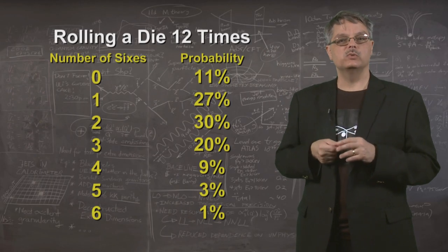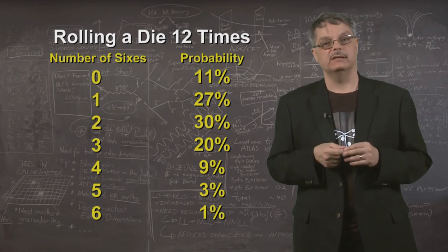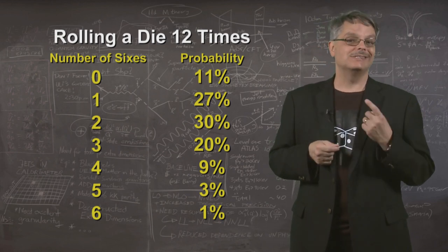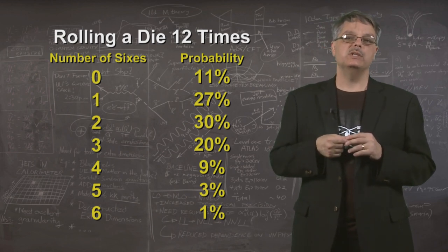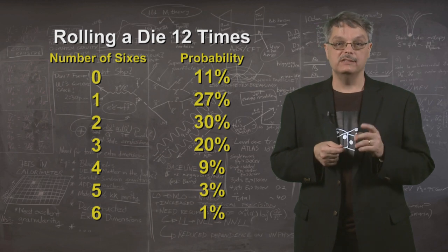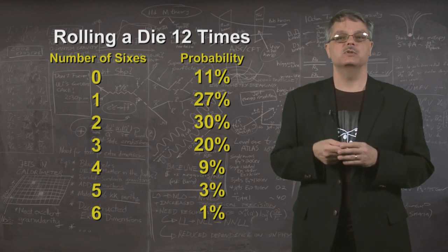When we do this, we find that even with fair dice, we expect to roll no sixes about 11 percent of the time. We expect to roll a single six about 27 percent of the time. It turns out that we expect to roll two sixes about 30 percent of the time, which means that we expect to roll something other than two sixes about 70 percent of the time.